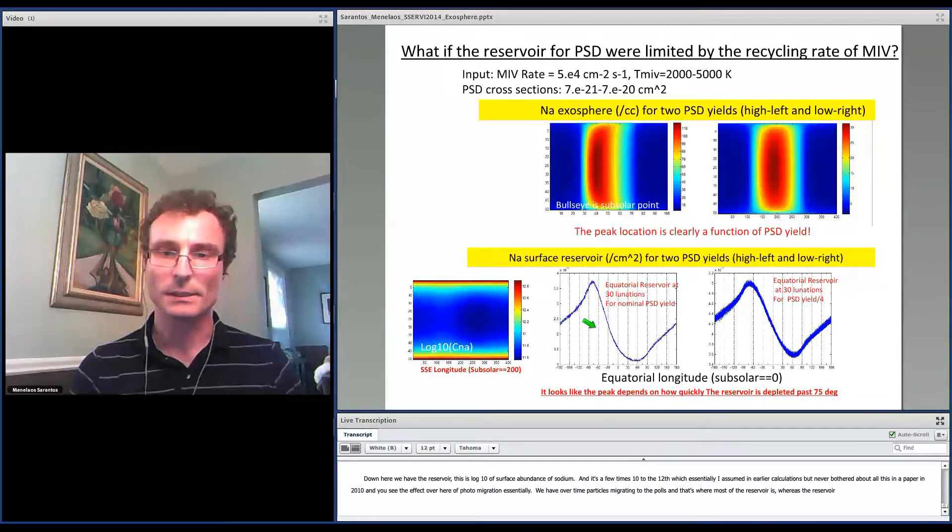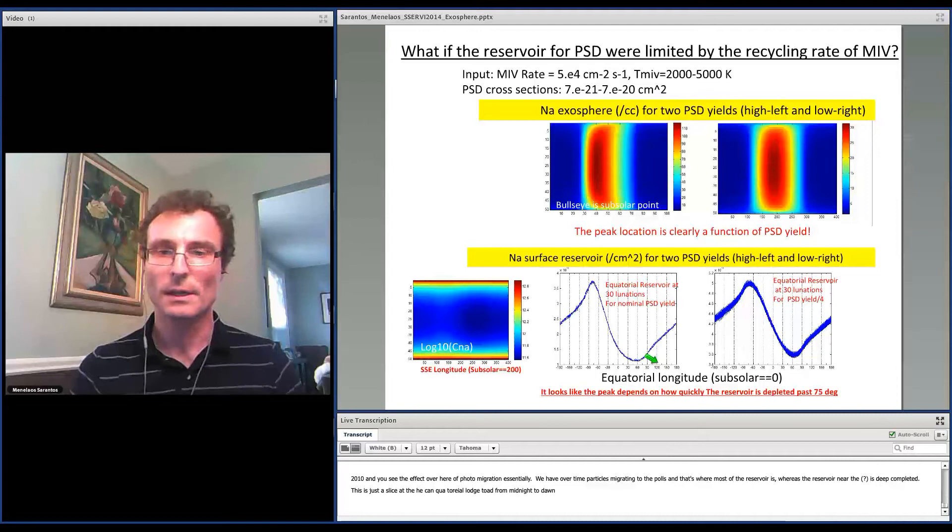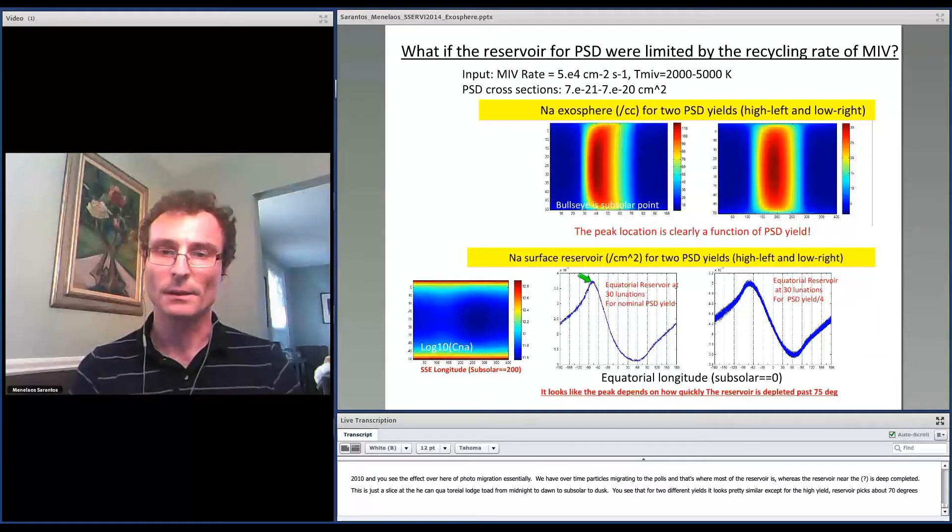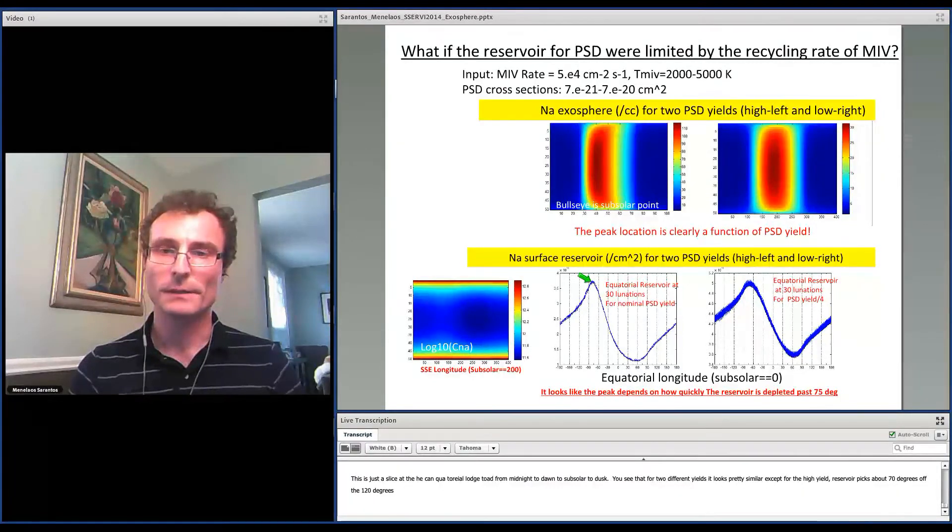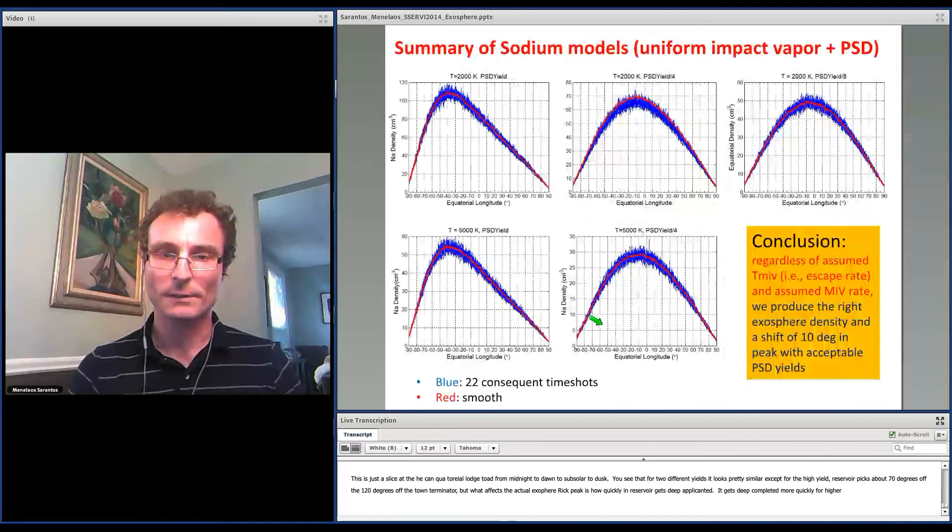This is a close-up, essentially, just a slice of the equatorial longitude from midnight to dawn to subsolar to dusk. And you see that for two different PSD yields, it looks pretty similar except for the high yield. The reservoir peaks at about 70 degrees from the subsolar point or 20 degrees from the dawn terminator. But what affects the actual exosphere's peak is how quickly this reservoir gets depleted—it gets depleted more quickly for higher PSD yield.